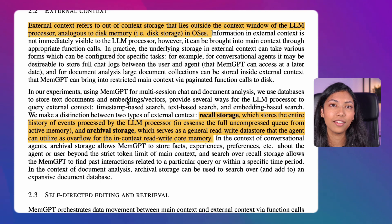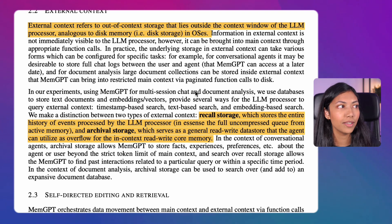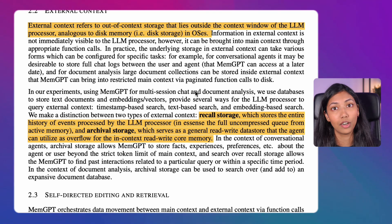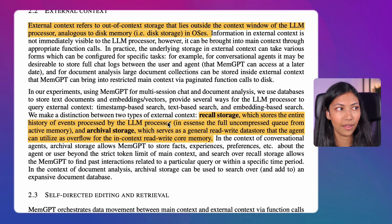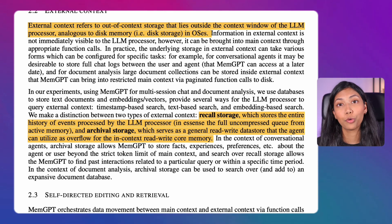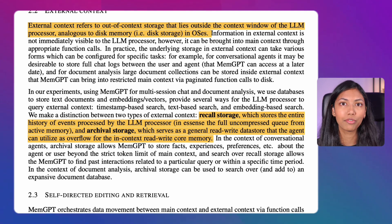According to the research paper, MemGPT makes use of databases to store both text documents as well as embeddings and vectors. This provides several ways for the large language model processor to query external context. For example, MemGPT is able to query data inside external storage based on timestamps, text-based search, as well as embedding-based search. By being able to query in these different forms, MemGPT can effectively search for the right information to bring into main context for inference.